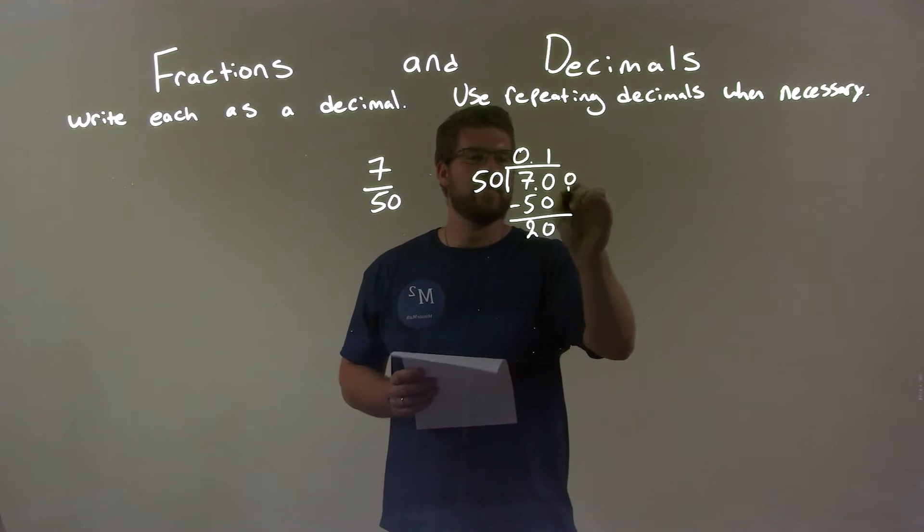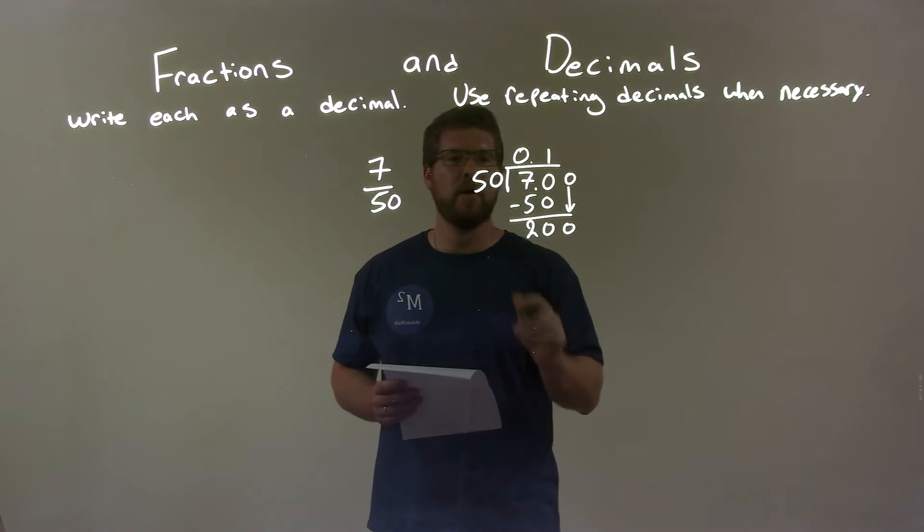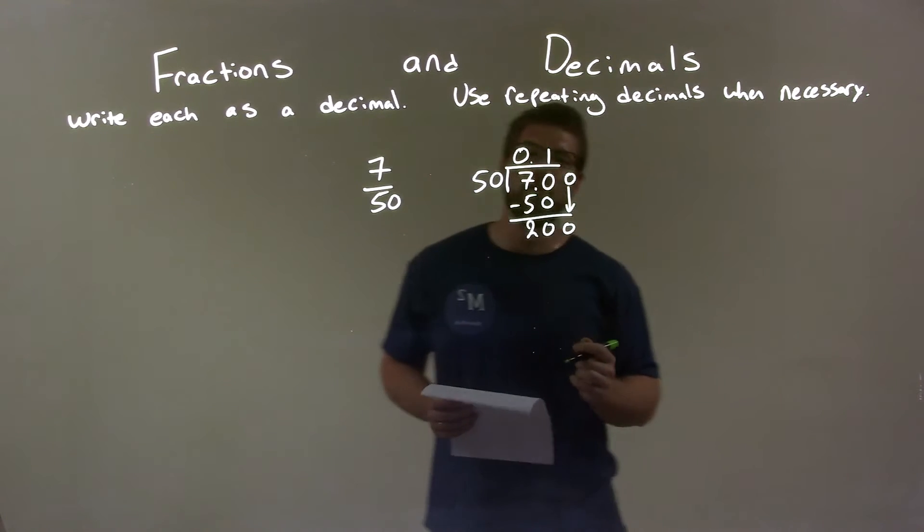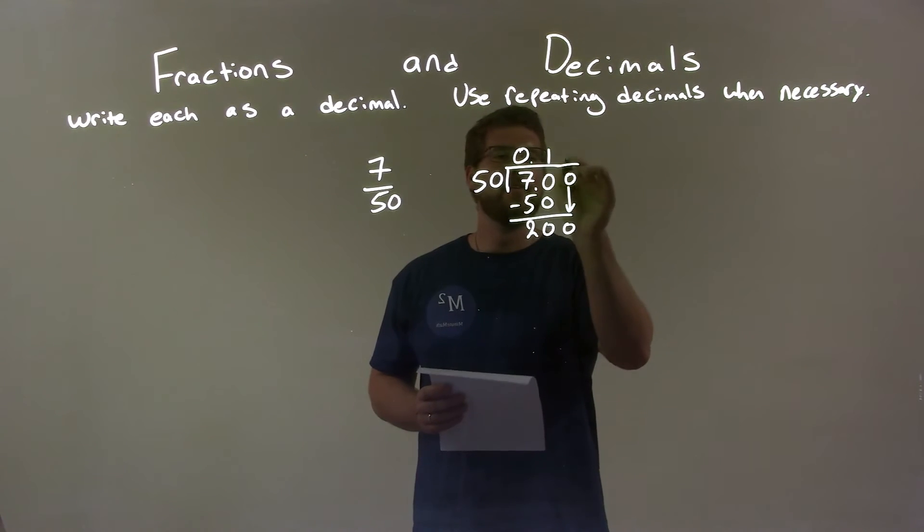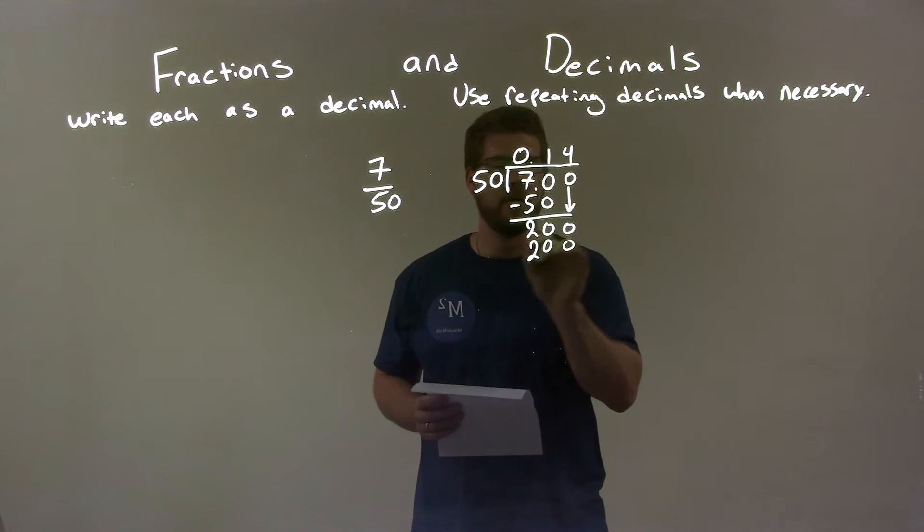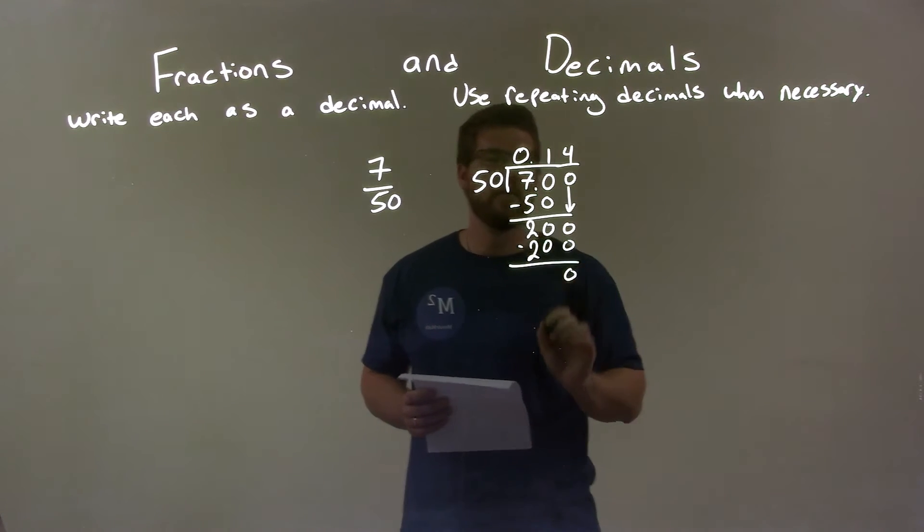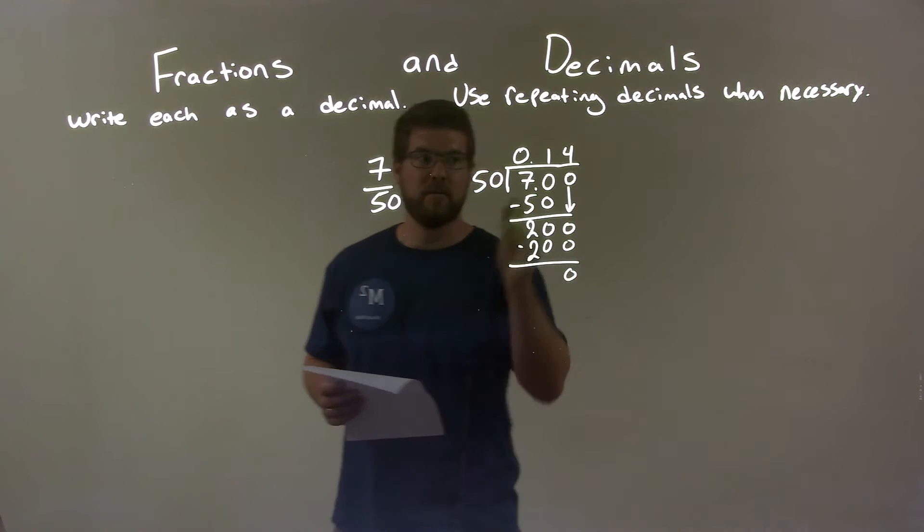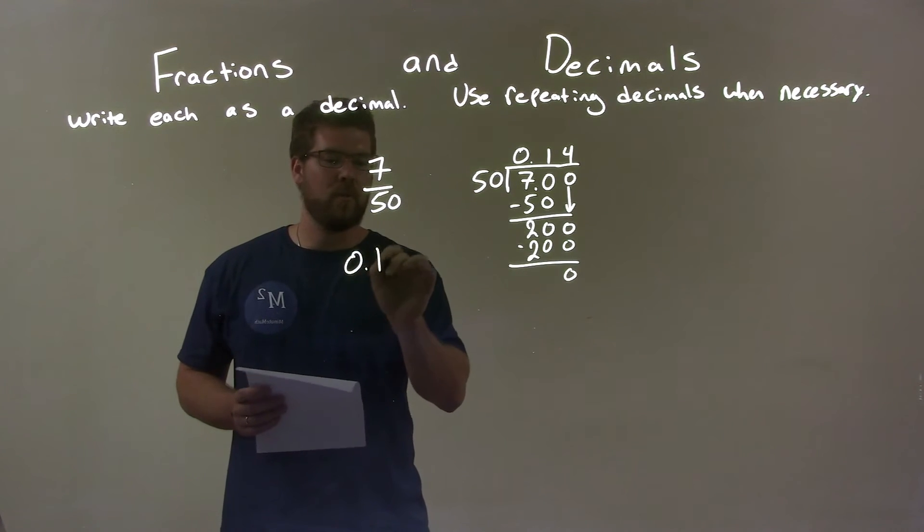We add another 0 there, and we have 200 now. Now, how many times does 50 go into 200? Well, that is just 4. 4 times 50 is 200. We subtract it, we get a 0, and so we have our answer now, our final answer, 0.14.